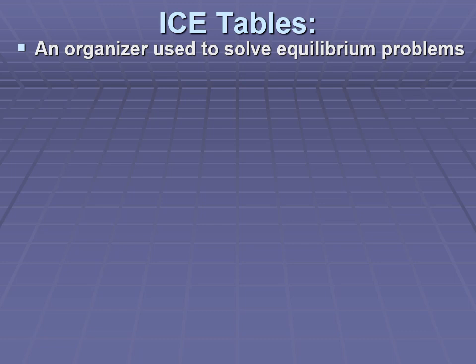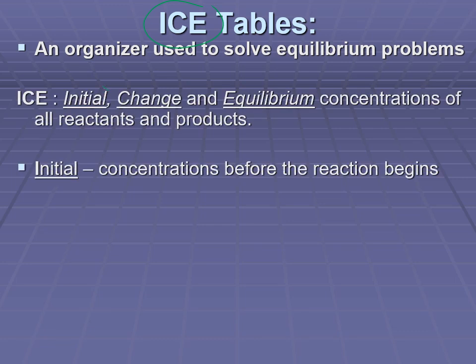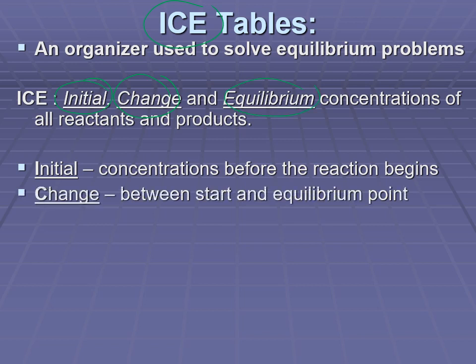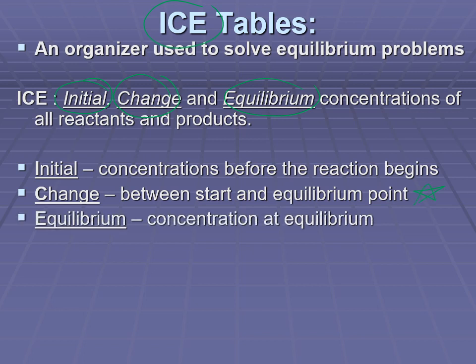We can keep track of information for an equilibrium calculation using what's known as an ICE table. ICE stands for the rows of the table: Initial concentration, Change, and Equilibrium concentration. It looks at the initial concentration of all species in the reaction, the amount in which they are changing — that's where the mole ratios are applied — and their equilibrium concentration. The initial concentrations don't have to be in perfect stoichiometric amounts, but the manner in which they change is dictated by the chemical reaction's coefficients.